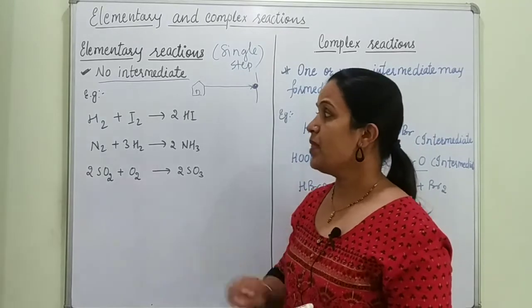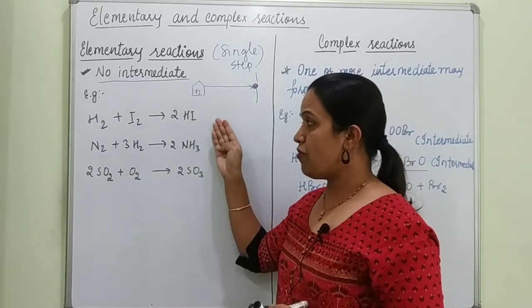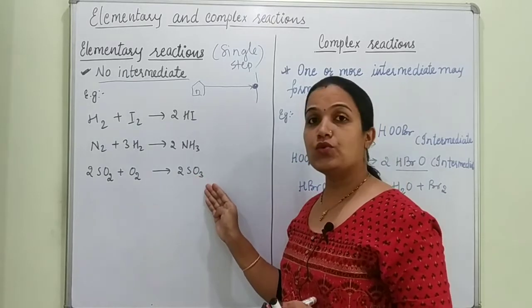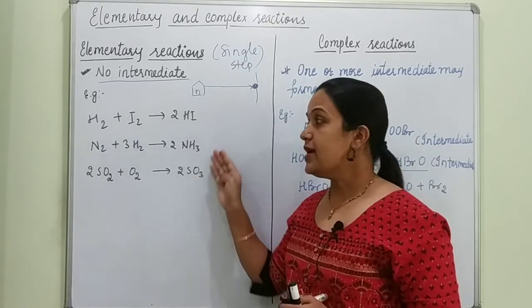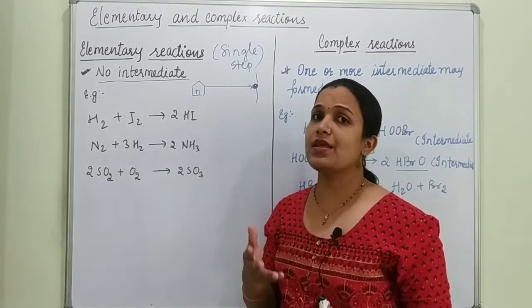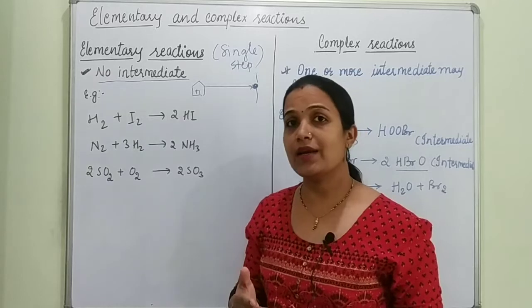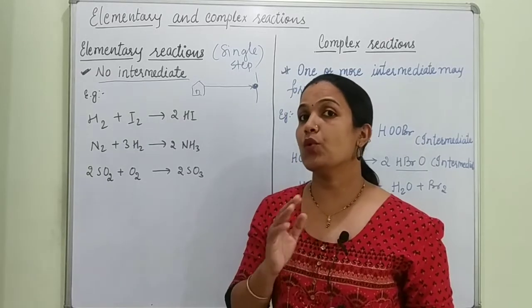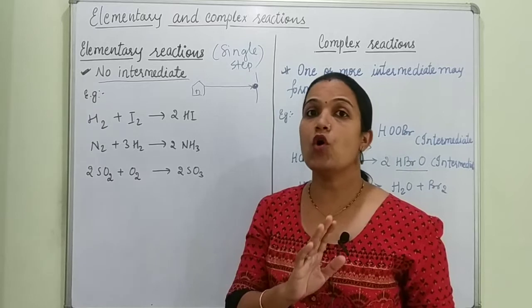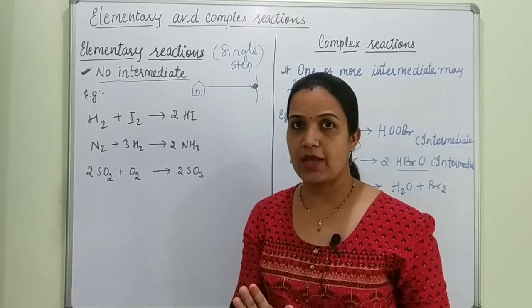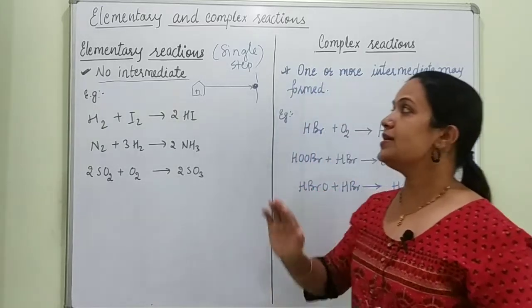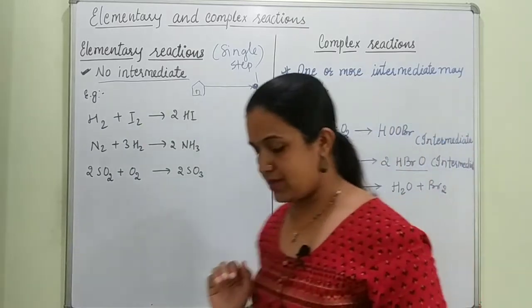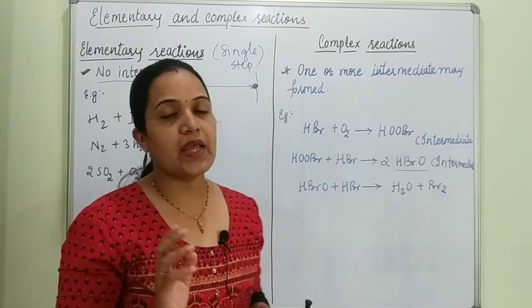For example, we see how HI is formed, how NH3 is formed, and how SO3 is formed. All those reactions are categorized as elementary reactions in which no intermediate is formed.